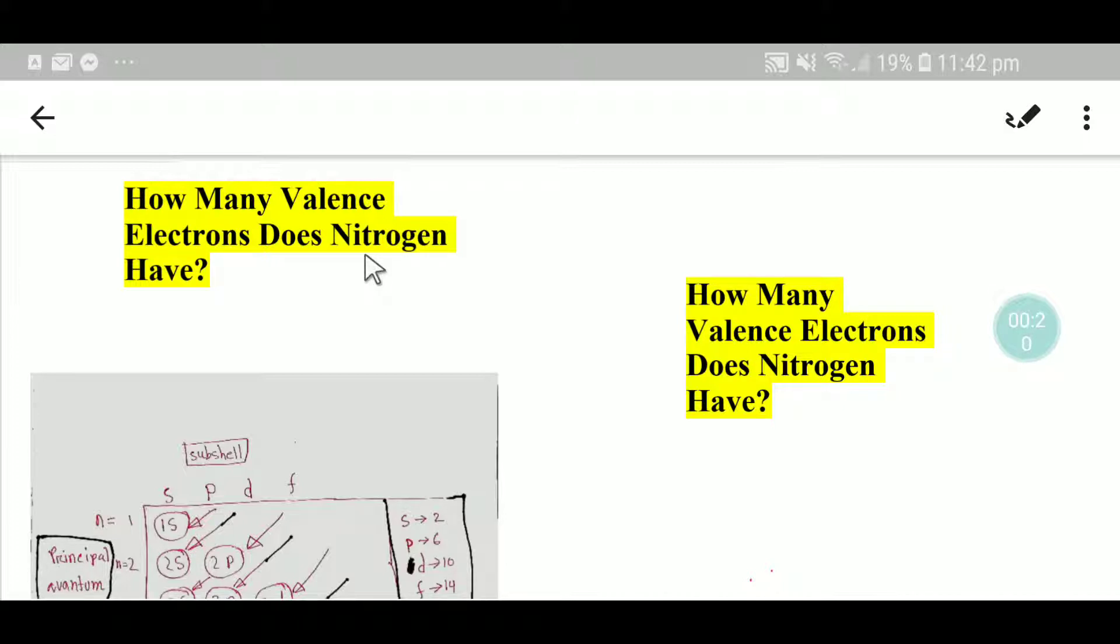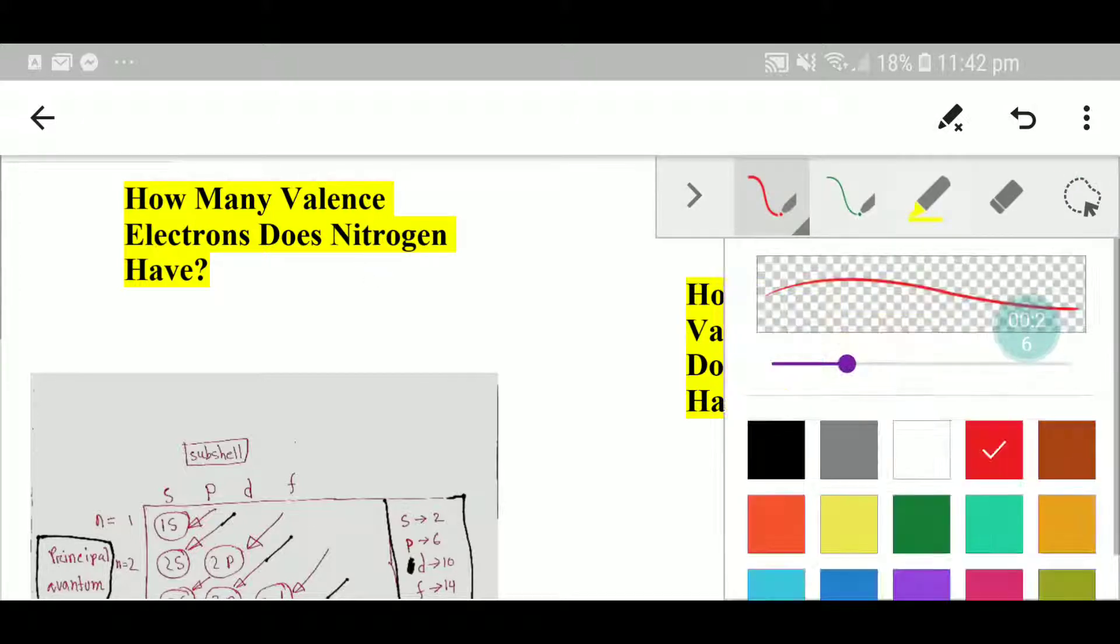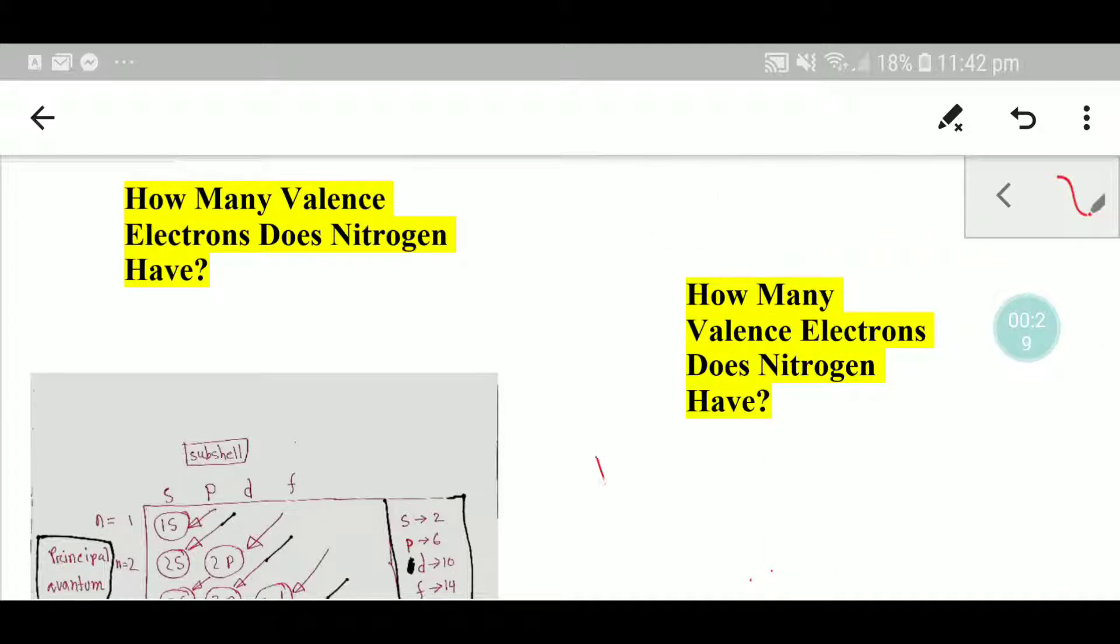In the first step we'll find out the atomic number of nitrogen from the periodic table. From the periodic table you know that the atomic number of nitrogen is seven. This means that nitrogen has seven electrons and seven protons.